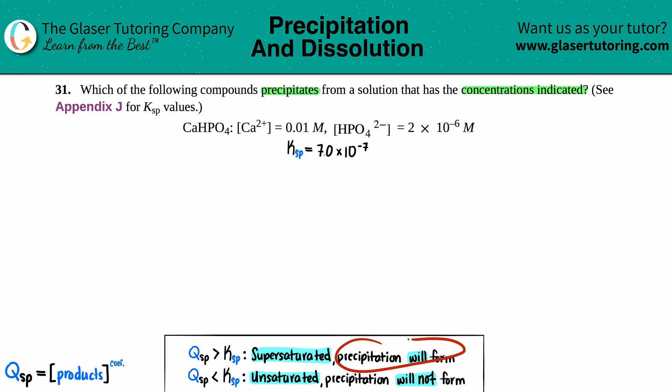Remember, precipitate is a solid, so it's remaining solid that doesn't dissolve. But if your Qsp is less than the Ksp, that's unsaturated and a precipitate will not form.